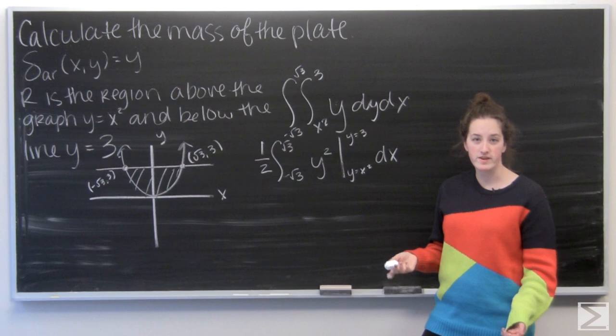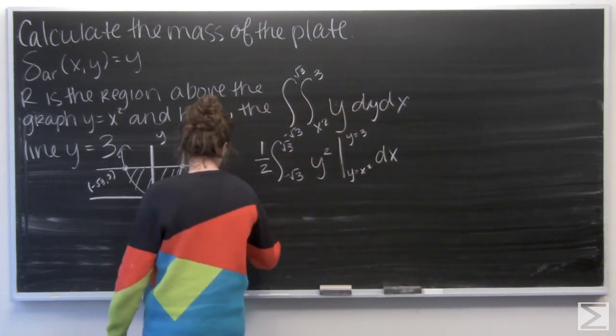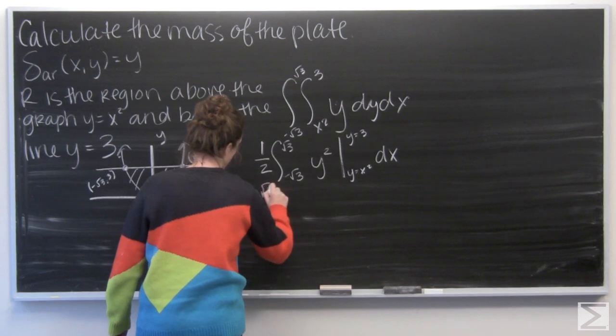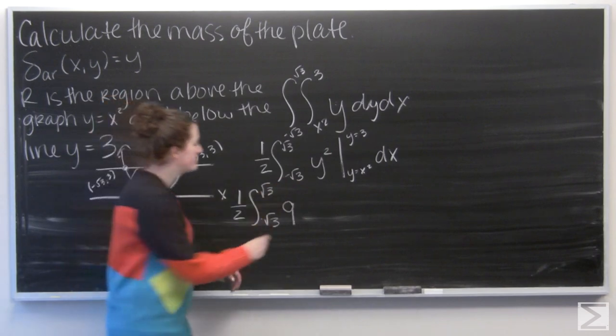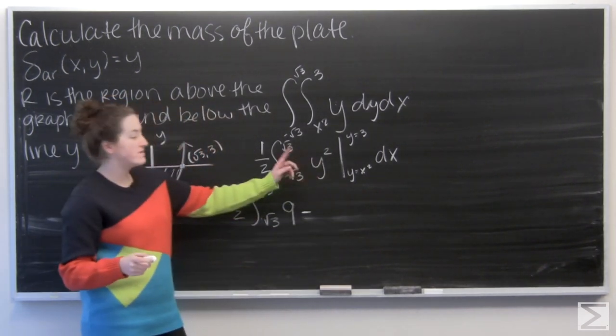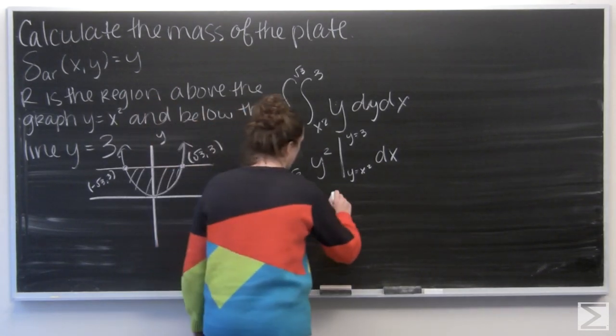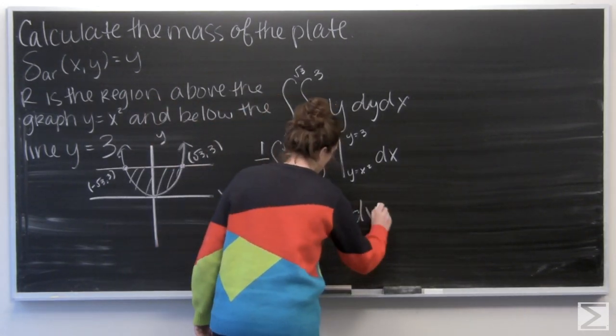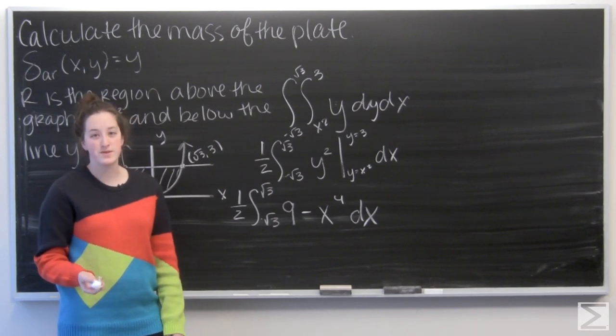And I want to evaluate that from y equals x squared to y equals 3. So let's plug in a 3 first. 3 squared gives me 9. And then minus x squared squared, which gives me x to the fourth.